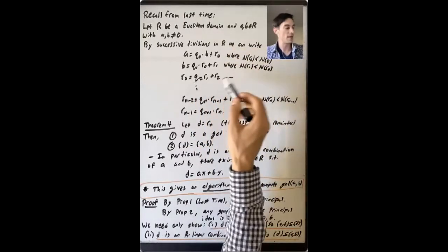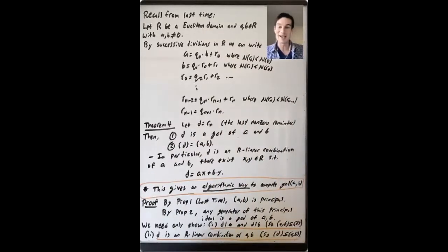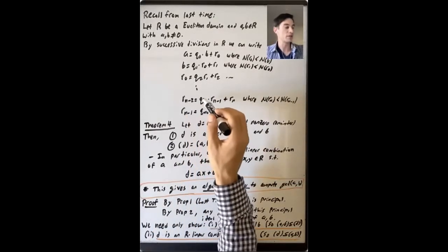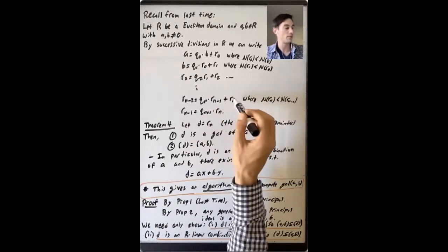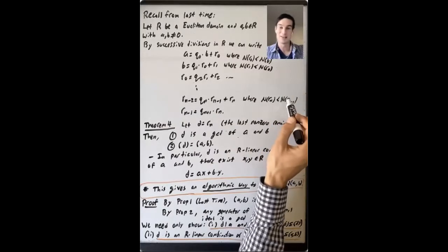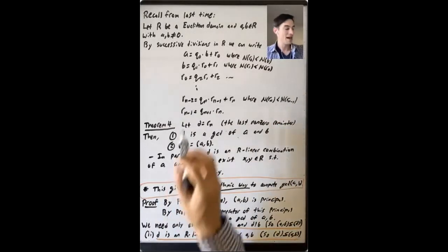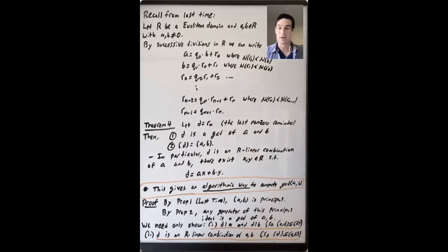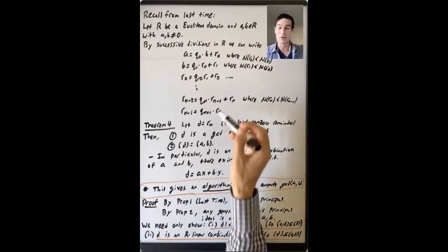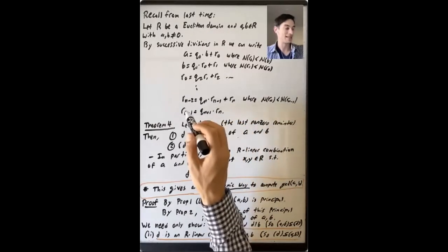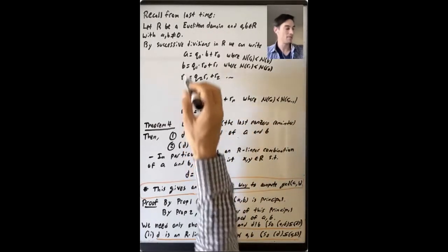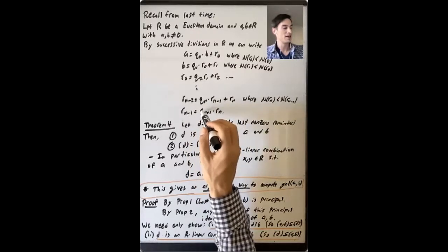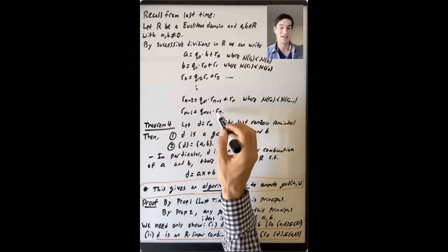We get this sequence of remainders, and when we take the norms, we're getting a strictly decreasing sequence of non-negative integers, so it must terminate. At some point we have R_{n-2} equals Q_n times R_{n-1} plus R_n, where the norm of R_n is less than the norm of R_{n-1}. And then R_{n-1} equals Q_{n+1} times R_n with no remainder — exactly zero.